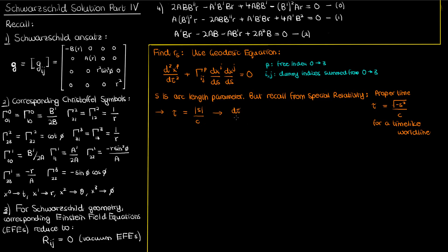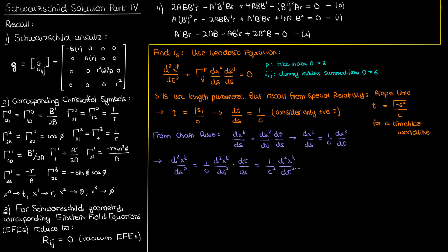The derivative of tau with respect to S is then just 1 over C, that's because we're only considering positive proper times. So if we use the chain rule, we can write the derivative of some coordinate X^K with respect to S as the derivative of X^K with respect to the proper time tau times the derivative of tau with respect to S. But we know dτ/dS is just 1 over C, so dX^K/dS simplifies to this. When we take the second derivative of X^K with respect to S, we get another factor of dτ/dS. So now the second derivative of X^K in S is its second derivative in tau times 1 over C squared.